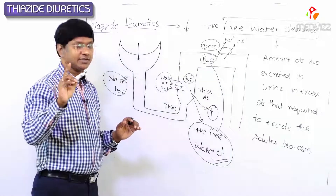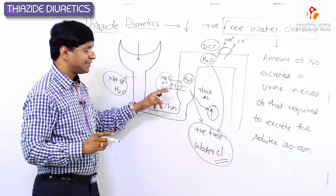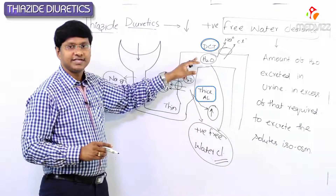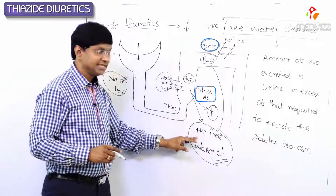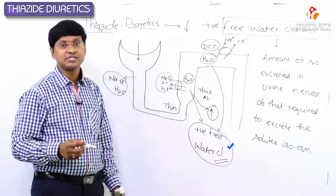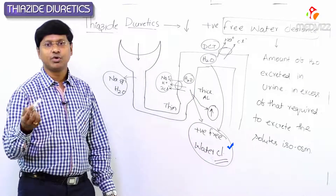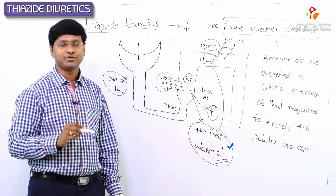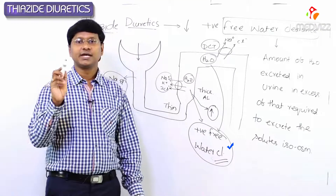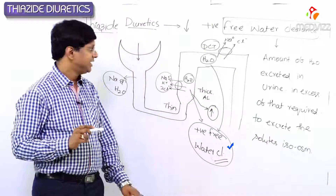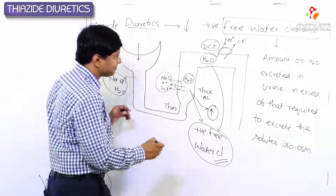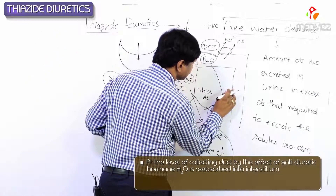Remember, whether at the thick ascending limb of the loop of Henle or at the level of the DCT, there is positive free water clearance because the amount of water is more compared to that of the solutes.